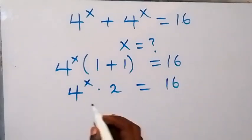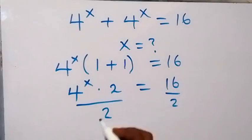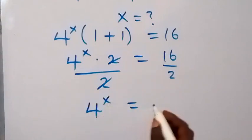From here we can divide both sides by 2 to remove the 2. Two cancels 2, then 2 goes into 16 that's 8. So we have 4 raised to x equals 8.